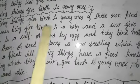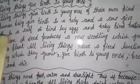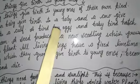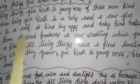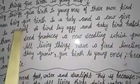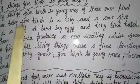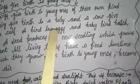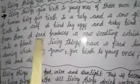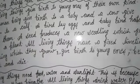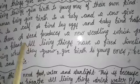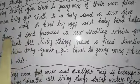A human being gives birth to a baby, and a cow gives birth to a calf — जो cow का baby होता है, उसे हम calf यानी बछड़ा बोलते हैं. A bird lays eggs, and a baby bird hatches from them — egg से उन जैसा एक छोटा सा baby निकलता है, जो बड़ा होकर बिल्कुल उसी bird की तरह दिखाई देगा.